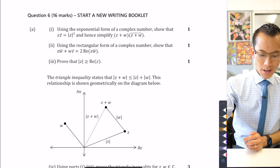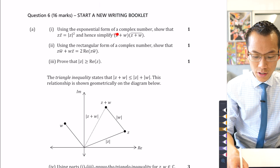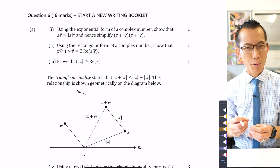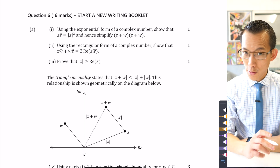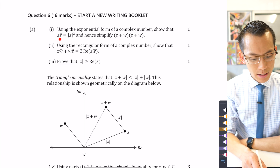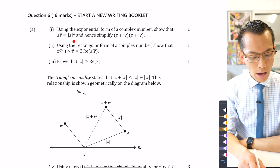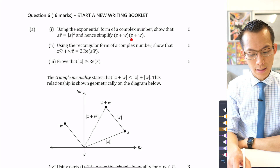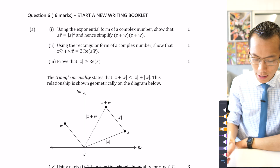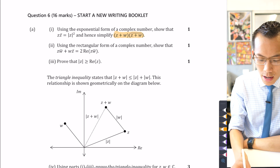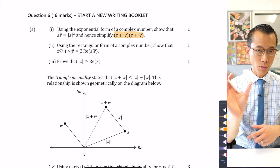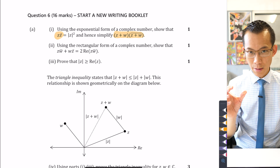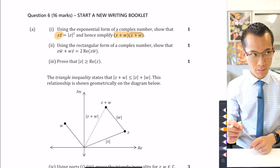It begins using the exponential form of a complex number. We've seen before that different forms of complex numbers are more suitable for solving different kinds of problems. The particular result in part one is: show that z times its conjugate z̄ equals the modulus of z all squared, and hence simplify (z + w)(z + w̄). There's a clear parallel — the product of a complex number (z + w) with its conjugate compared to z·z̄.